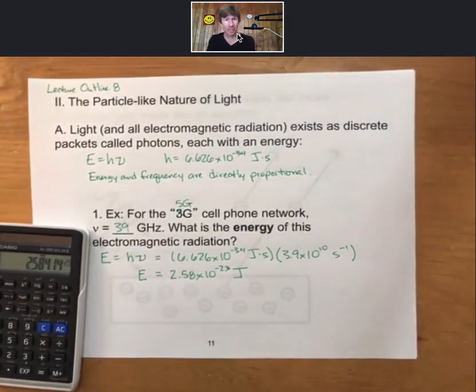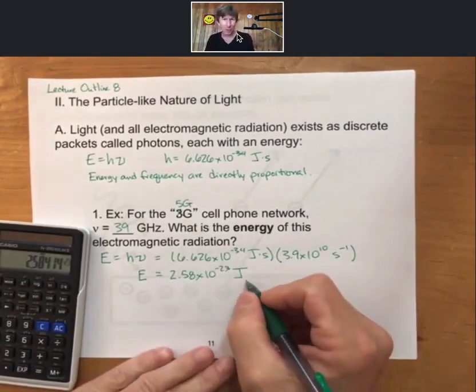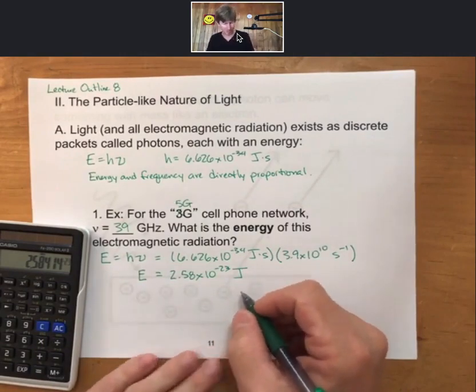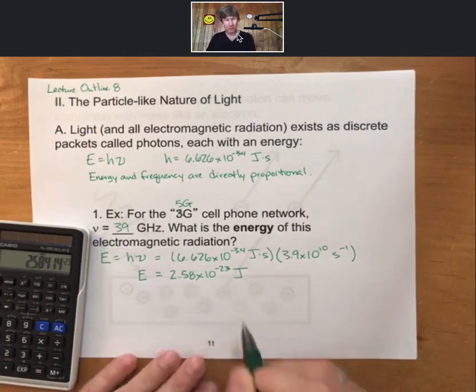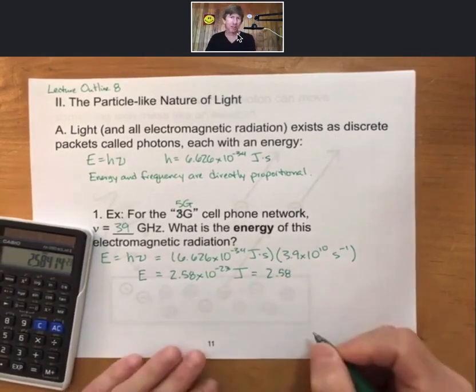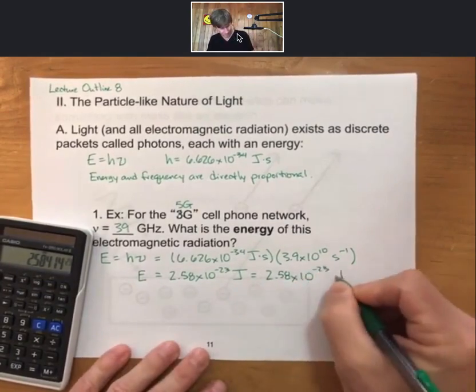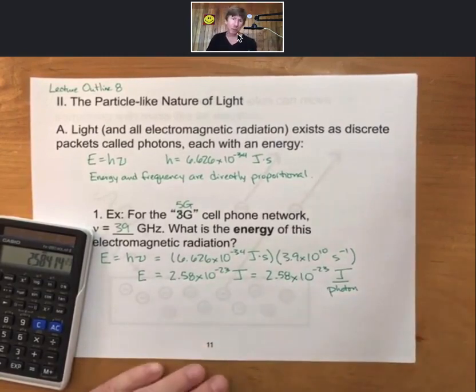And we get 2.58 times 10 to the minus 23rd joules, an extremely small amount of energy. But you get enough of these photons together, when you get moles of them, you will have enough to create some nice energies. The equation gives you units of joules. Since this calculation is done for a single photon, we can add units of per photon, because this is the energy of a single photon, it is joules per photon.